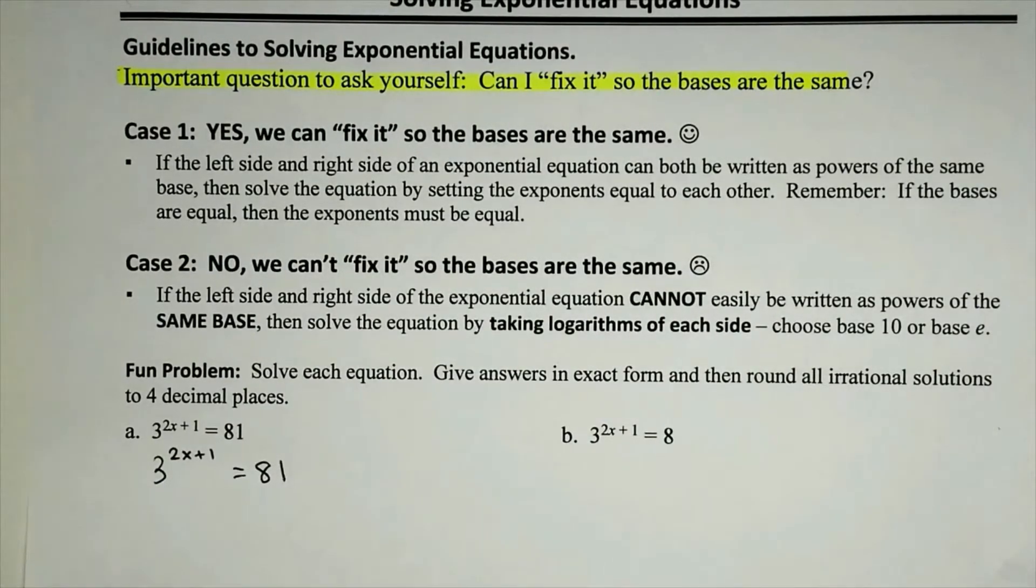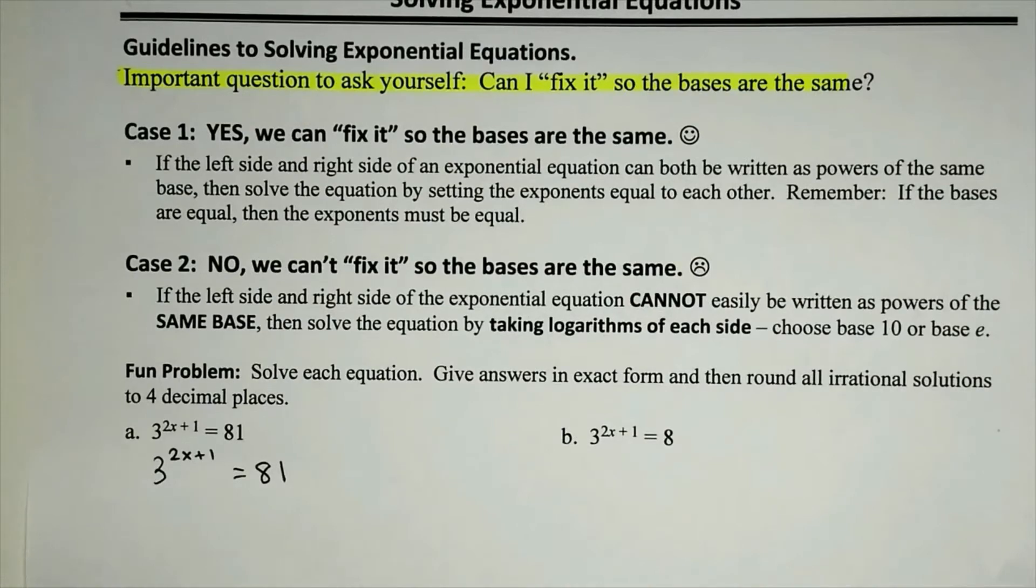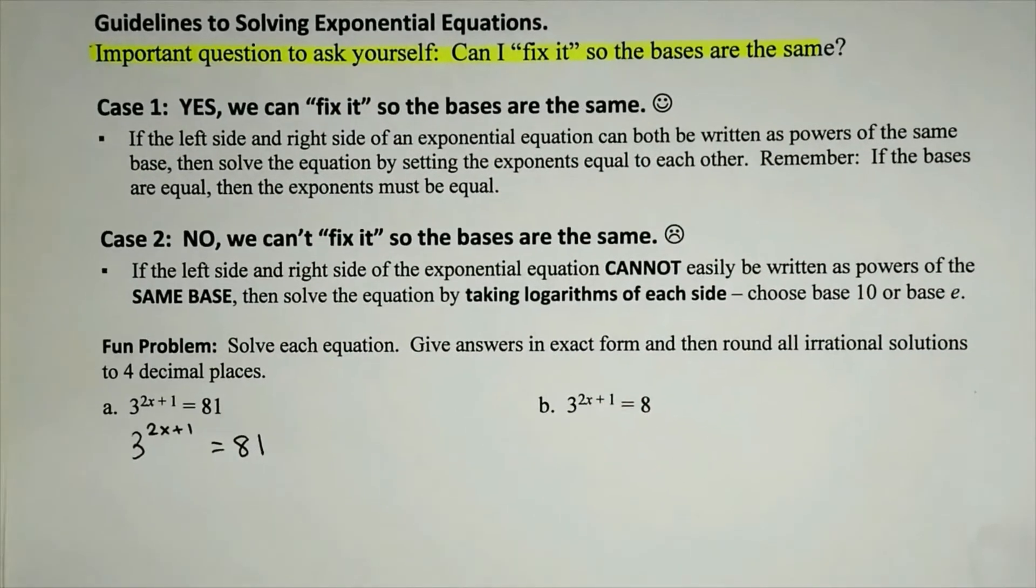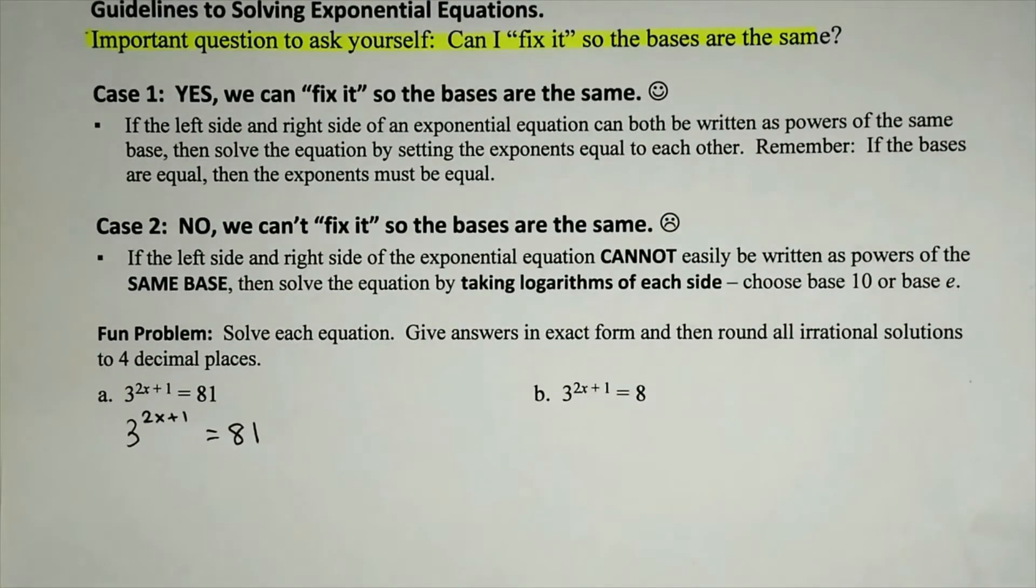So what I'm going to ask myself is, what kind of equation is this? Same speech that I give myself every time that I solve an equation. Is it linear, quadratic, radical, rational? In this case, we notice that we have a variable in the exponent. So this means that we have an exponential equation. And for exponential equations, what we want to ask ourselves is, can we easily fix it so the bases are the same?